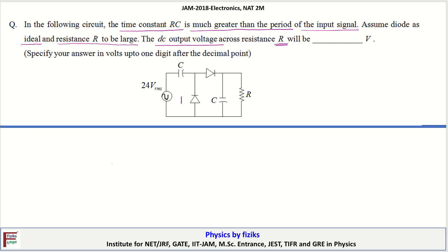So let us assume this diode is D1 and this diode is D2 and input voltage is given. So input is 24V VRMS. So peak value will be Vm and this will be root 2 times VRMS. So peak value of the input is 24 root 2V.